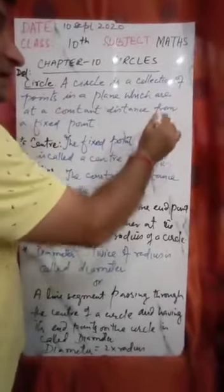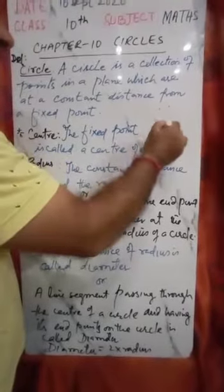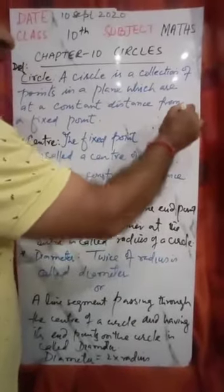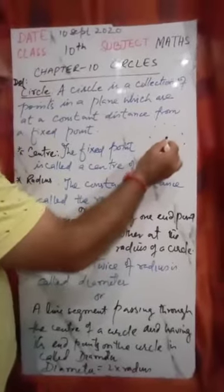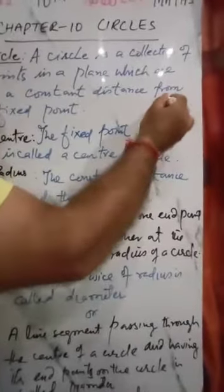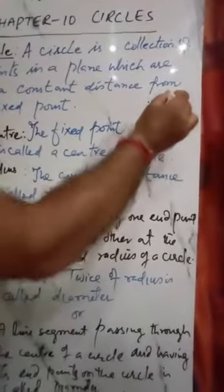Suppose this is a plane and all those points in a plane which are constant distance from a fixed point. Suppose this is a fixed point O and these are the collection of points which are equidistant.